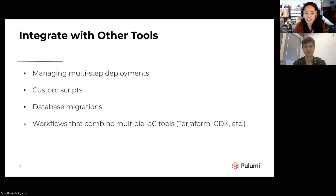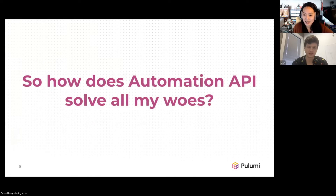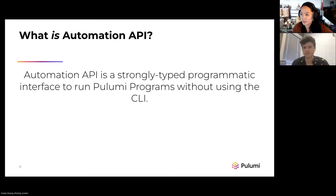There are a lot of different ways you can package up your infrastructure code, and a lot of ways that overhead might be introduced when deploying that infrastructure. Since we love infrastructure as code, wouldn't it be great if we could move some of this overhead into code as well? That is exactly what Automation API does. Automation API is a strongly typed programmatic interface to run Pulumi programs without using the CLI.